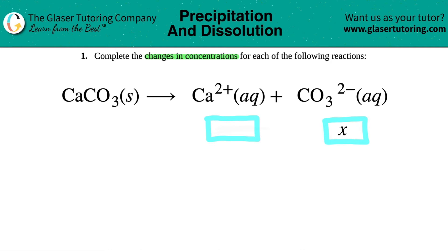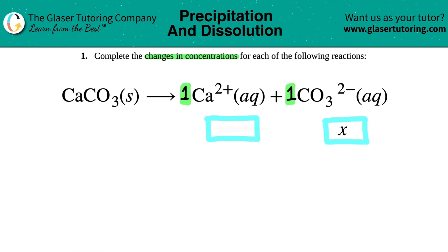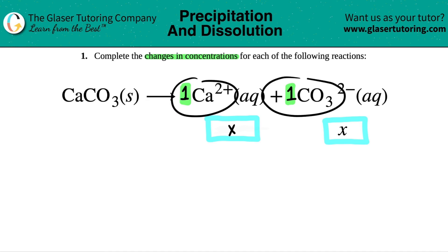These are always determined by the mole ratio, which is the coefficients — the big numbers in the front of a balanced equation. Looking in front of Ca²⁺ and in front of CO₃²⁻, I don't see any number, which means they're both one. It's a one-to-one mole ratio, so Ca²⁺ also changes by x. They both change by the same amount because they have the same coefficient.